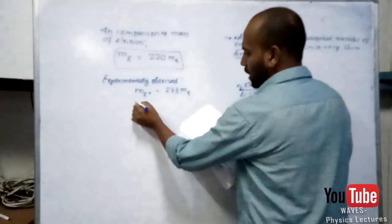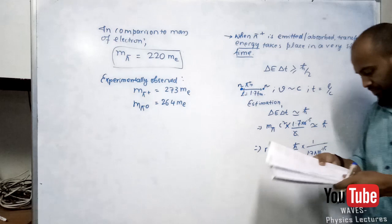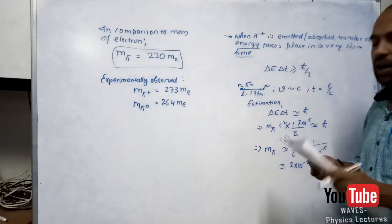Another particle was detected with mass 264 times that of the electron. These experiments are usually quite accurate. These results were in consensus with whatever was observed experimentally, matching Yukawa's predictions.